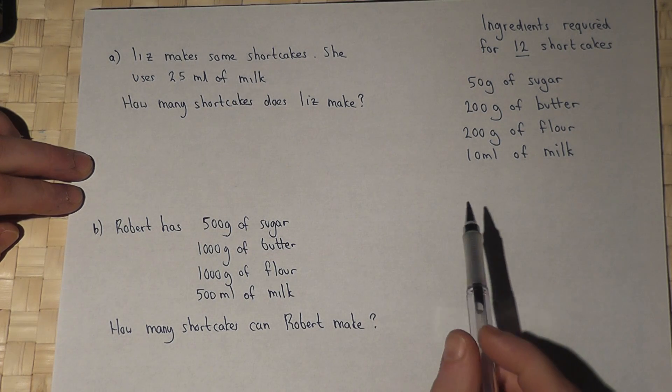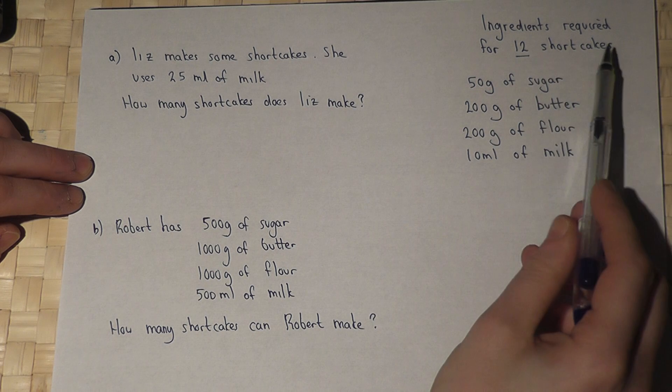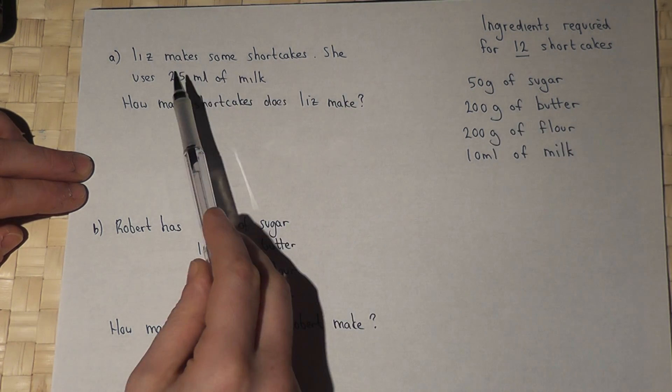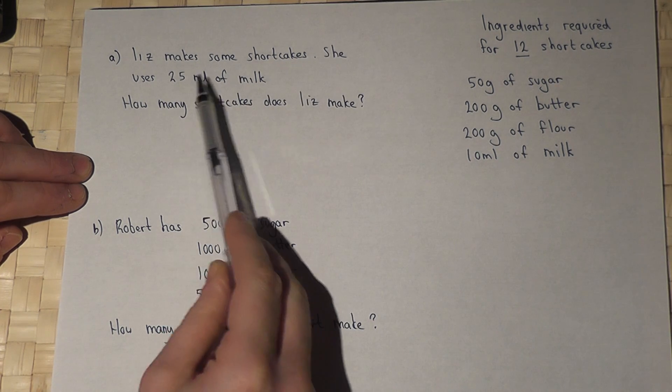In this problem, we're given the ingredients required to make 12 shortcakes. Down here, look. Now, we're told that Liz makes some shortcakes and she uses 25 milliliters of milk.